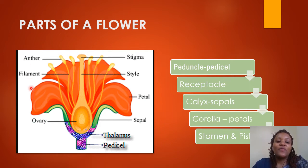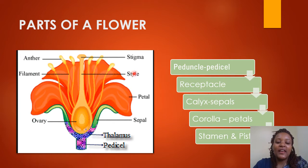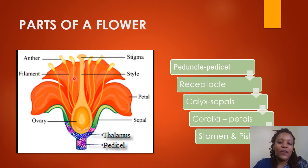Parts of a flower — as you can see from this picture, we have several parts. We have the stigma at the upper part of the flower, then we have the style, then we have the ovary down here, then we have the anther, and then we have the filament — this rod-like structure that is holding the anther.